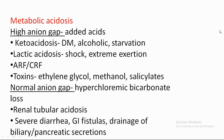Hyperchloremic Metabolic Acidosis is also called Normal Anion Gap Metabolic Acidosis. Its causes include Renal Tubular Acidosis, severe diarrhea, GI fistula, and drainage of biliary or pancreatic secretions.